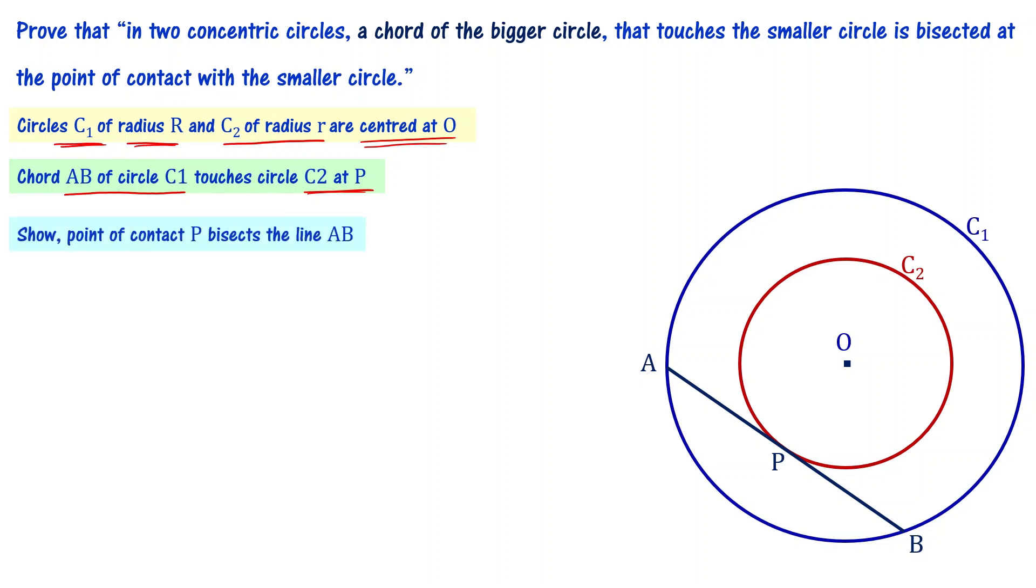Chord AB of circle C1 is touching C2 at point P. To prove this statement, we have to show that the point of contact P bisects the line AB, so AP equal to PB.